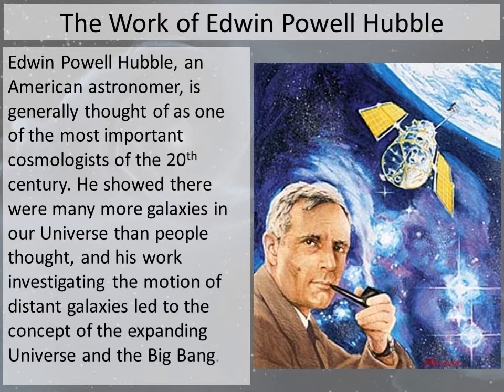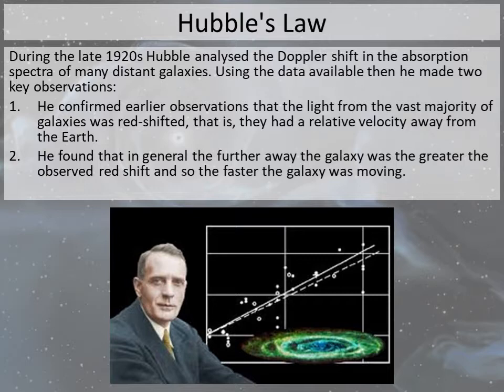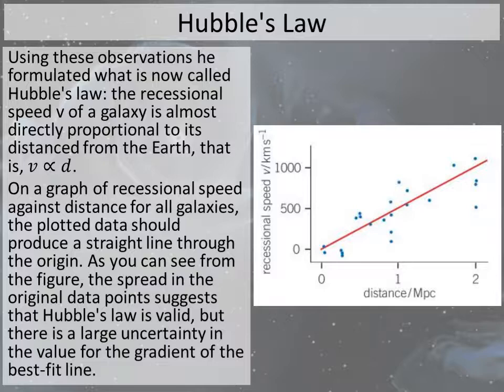Edwin Hubble — hilariously smoking a pipe there — was one of the greatest cosmologists of the 20th century. What he started to show was that the distant galaxies were moving away from us, and the further they were, the faster they were moving. He made some observations initially and then started to use spectra, realizing that the electromagnetic waves from those galaxies were redshifted — which we covered in the Doppler effect — meaning they had a relative velocity away from us on Earth. He also generally found that the further the galaxy was from us, the more redshifted it was, i.e. the faster the recessional speed.